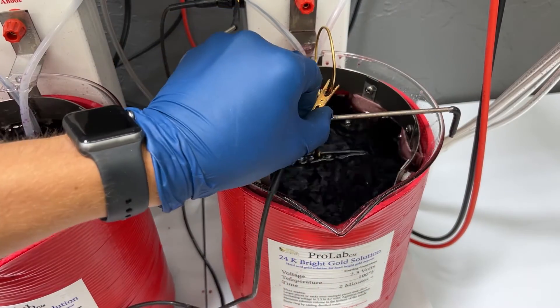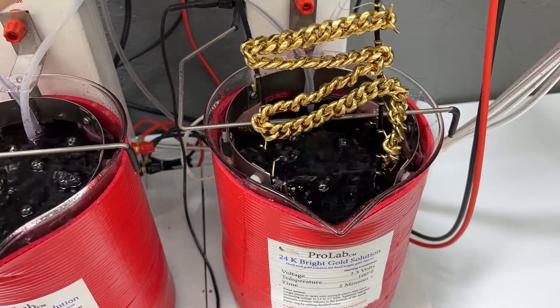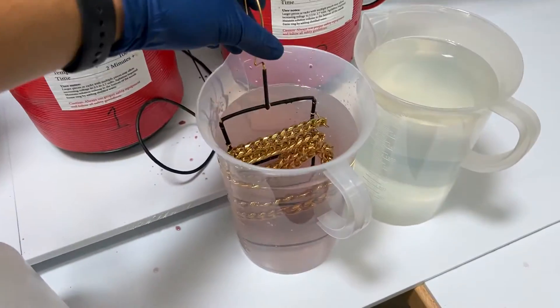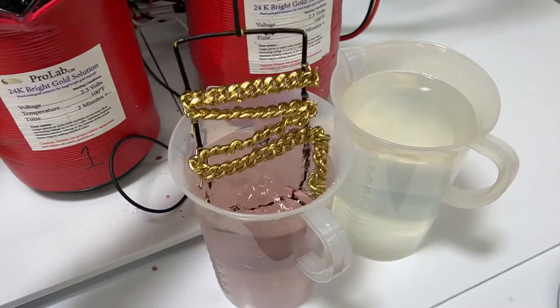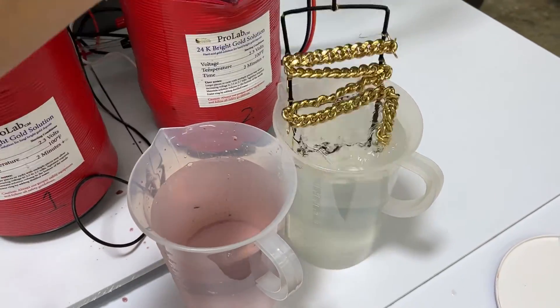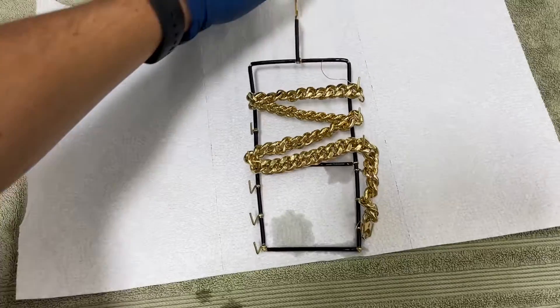By plating your gold thick enough to effectively seal the base metal or by adding a less reactive diffusion barrier under the gold, you can avoid this issue. Because of the cost of increasing gold thickness along with the uncertainty of how thick the gold plating layer actually is, the addition of a diffusion barrier is usually a recommended remedy.